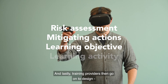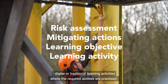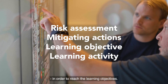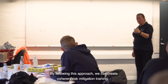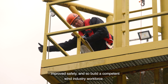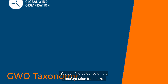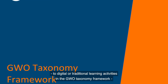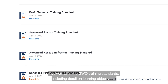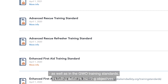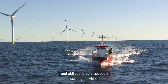And lastly, training providers then go on to design digital or traditional learning activities where the required abilities are practiced in order to reach the learning objectives. By following this approach, we can create coherent risk mitigation training, improved safety, and so build a competent wind industry workforce. You can find guidance on the transformation from risks to digital or traditional learning activities in the GWO Taxonomy Framework, as well as in the GWO training standards, including detail on learning objectives and abilities to be practiced in learning activities.